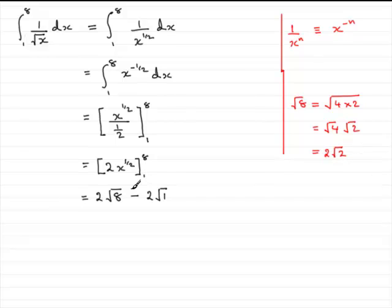So I can put that in here. And we get 2 times 2 root 2, which is going to be 4 root 2. And we know the square root of 1 is 1. So we just get minus 2 here.